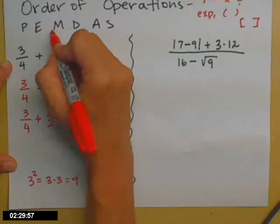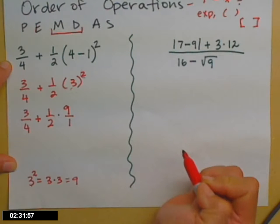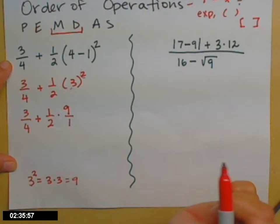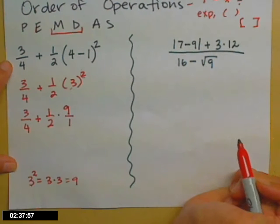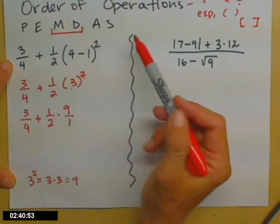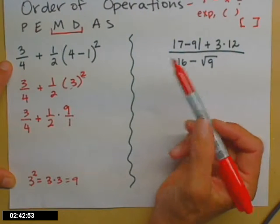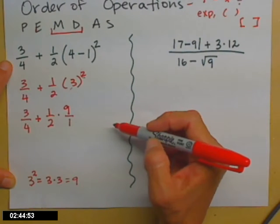Now I'm on to these guys, and these guys go together: multiplication and division. And sort of the new theme in textbooks, so what you guys will all be dealing with, is you work left to right. So these guys have the same authority, but you work left to right.